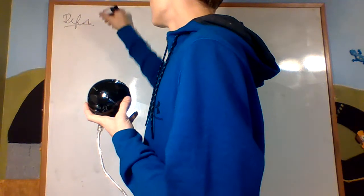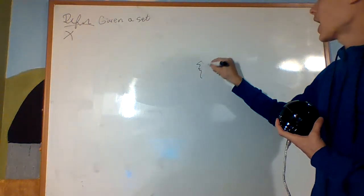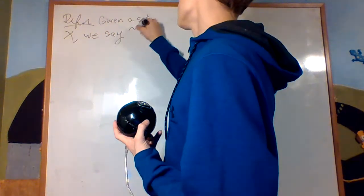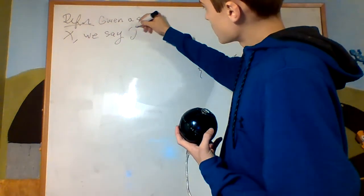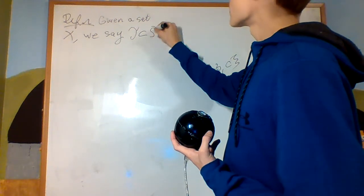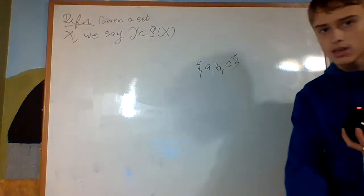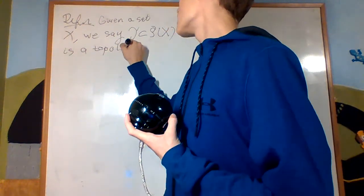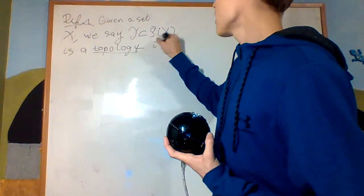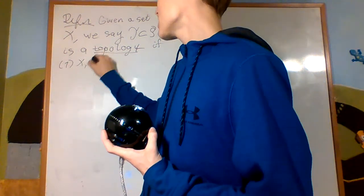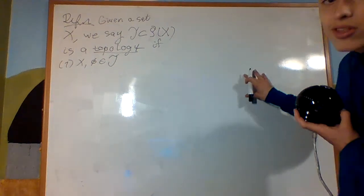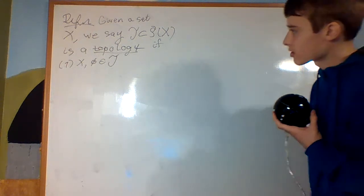Definition. Given a set, a set X, could be anything. It could be the set {A, B, C}. We say T, I'll denote like a weird sort of T, that is a subset of the power set of X. It's a collection of subsets. It's a collection of subsets of X, is a topology if, one, X and the empty set are in the topology. So they're open. X and the empty set are open. And you can prove that for them in just the general R^2, or R^n. The less general.